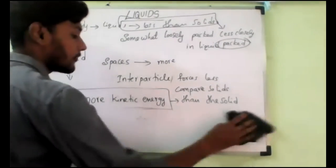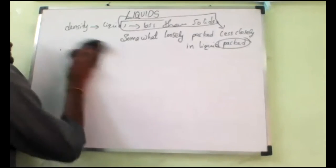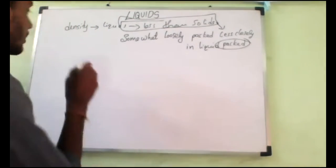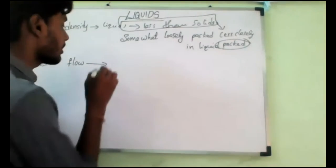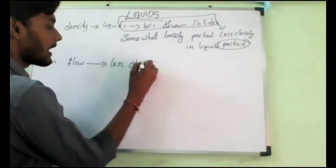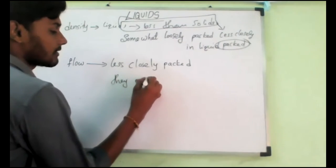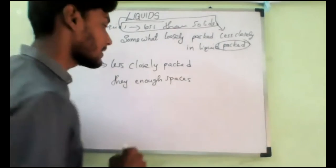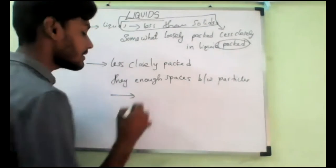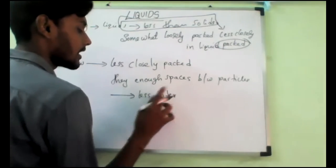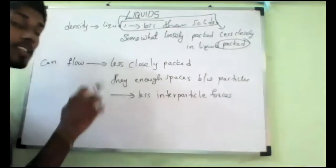If you keep liquid on the floor or a surface, not in a container, will it start flowing? Liquids can flow — water can flow, like any kind of liquid. They can flow because they are less closely packed, meaning they have enough spaces between the particles compared to solids. So they can easily move because of less inter-particle forces. Compared to solids, they have less density, but spaces are more, and inter-molecular forces are less.